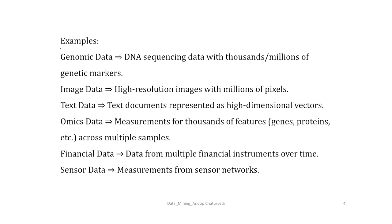Here are some examples of high dimensional data. The first example is genomic data. DNA sequencing data often has thousands or millions of genetic markers — observations on a very large number of genetic markers — and usually the number of genetic markers is much larger than the number of cases considered. So the number of variables is usually much larger than the number of observations.